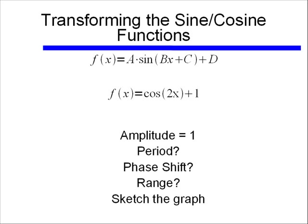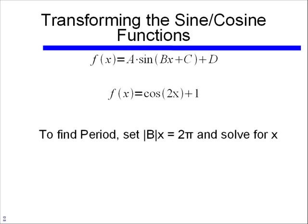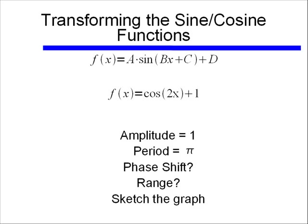Since we have a value for b that's not equal to 1, something's going to change with our period. To find the period again, we set the absolute value of bx equal to 2π, remember 2π is our normal period, and we solve for x. And when I do that I get 2x equals 2π, and dividing both sides by 2, I end up with my period being equal to π.